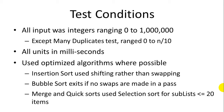Insertion sort uses shifting rather than swapping, bubble sort exits if there are no swaps made in a single pass, and merge and quick sorts use selection sort for sublists that are smaller than 20 items. I ran each test three times and took the average of three. If you want to see the detailed videos on each of these individual sorting algorithms and the code for them, I've posted those over the last couple weeks on my YouTube channel.